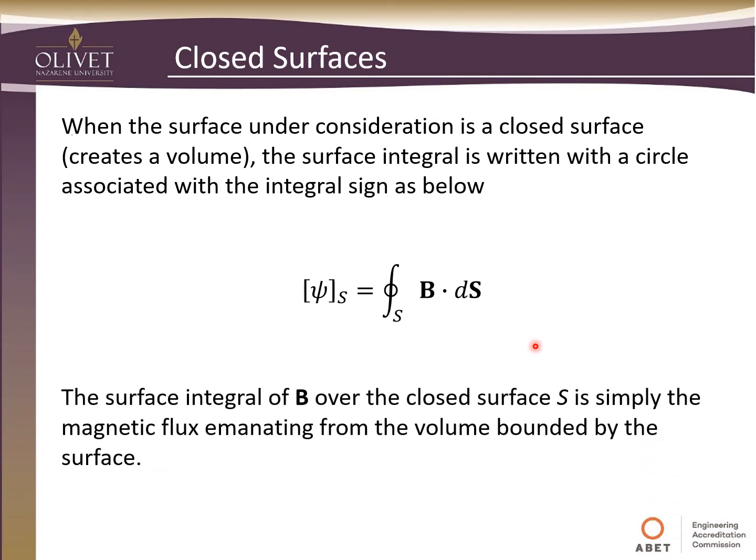So the surface integral of the magnetic flux over a closed surface S is simply the magnetic flux emanating from the volume bounded by the surface. And so the thing you need to keep in mind with that is you will have some flux going into the surface and probably some flux going out of the surface. So it'll be the net result of that.